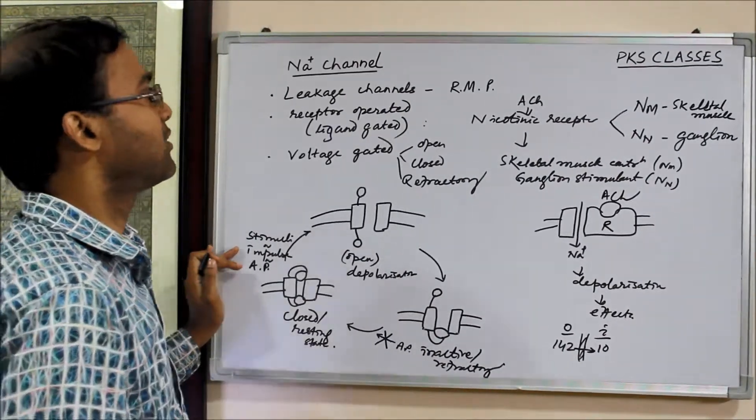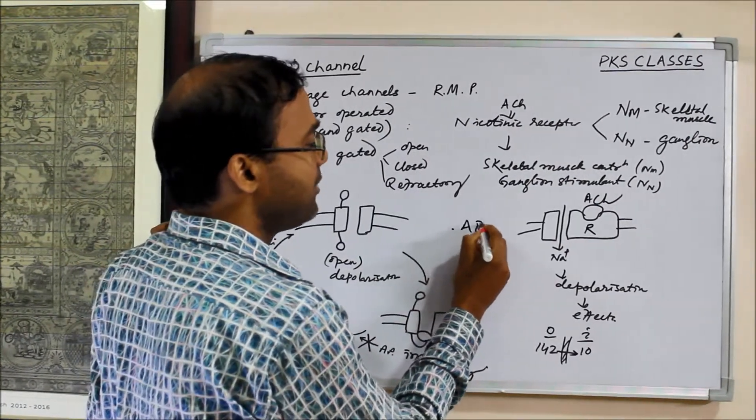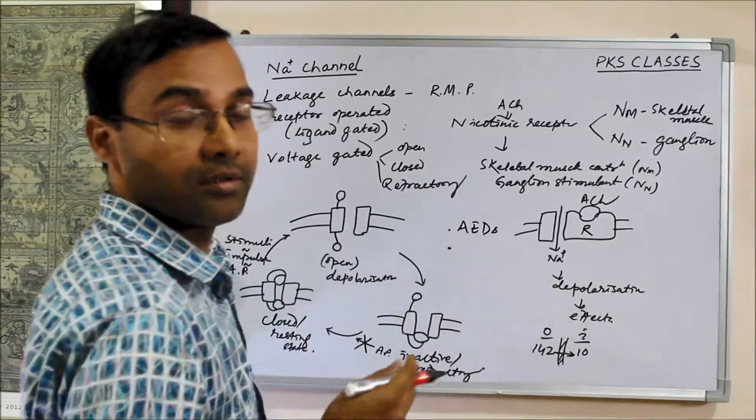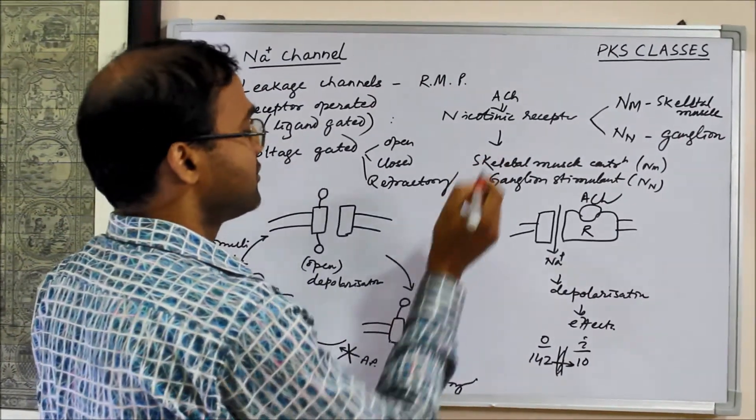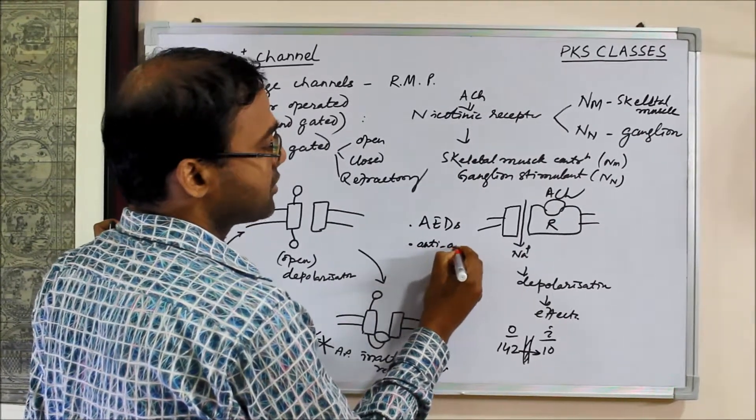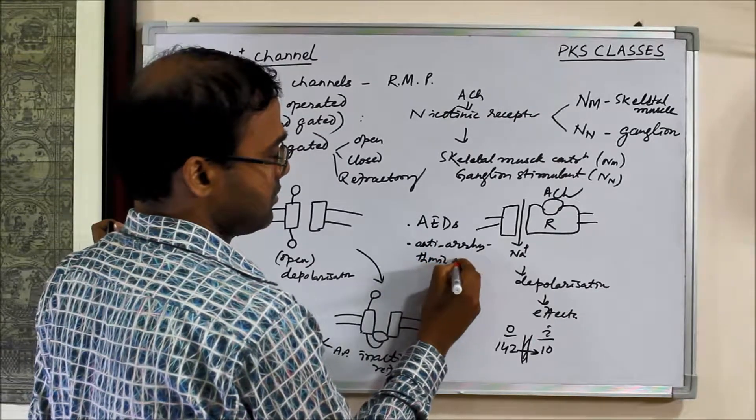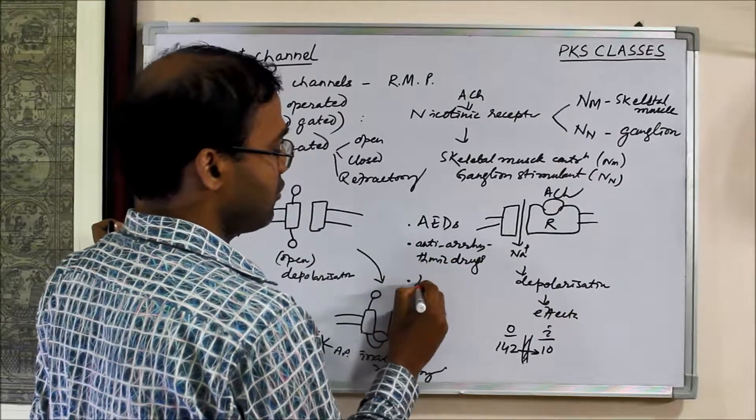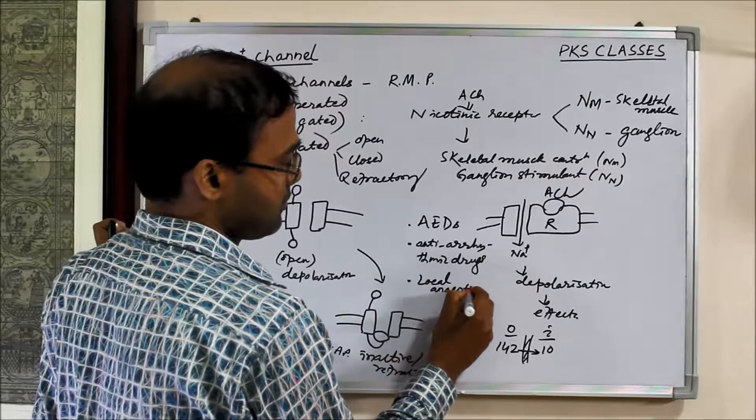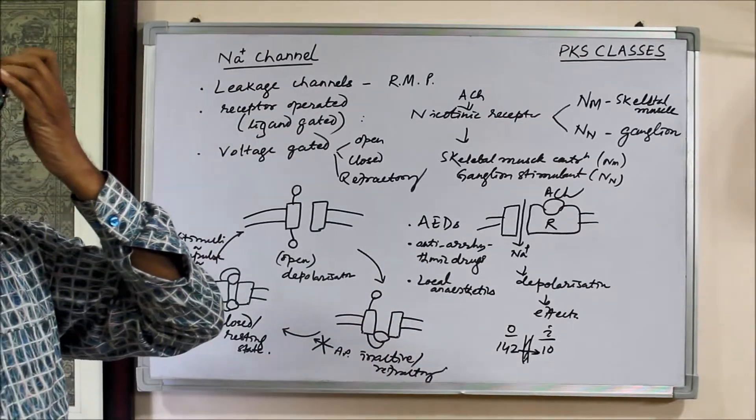Many drugs act on sodium channels: anti-epileptic drugs like phenytoin, valproic acid. They act on sodium channels. Then anti-arrhythmic drugs. Then local anesthetics. All of them are sodium channel blockers.